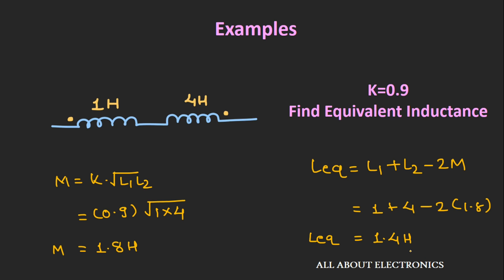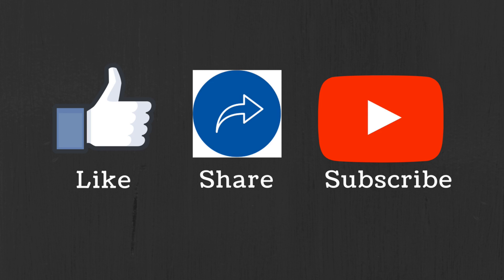I hope you understood how to derive an expression for two mutually coupled inductors connected in a series connection. In the next video, we will derive an expression for mutually coupled inductors connected in a parallel connection. If you have any questions or suggestions, let me know in the comment section below. If you like this video, hit the like button and subscribe to the channel for more such videos.